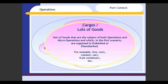Cargoes are lots of goods — sets of goods that are the subject of both operations and micro-operations, and which, in the port scenario, are supposed to be embarked or disembarked. For example, rice, corn, cement, cars, fruit containers, etc.